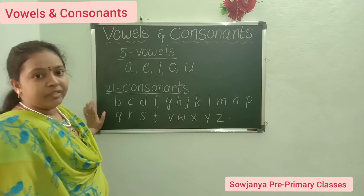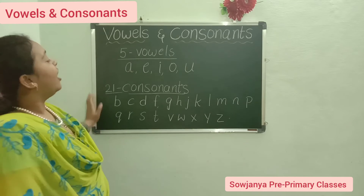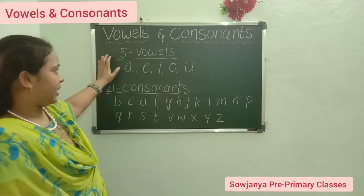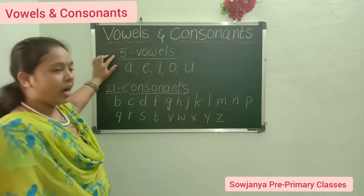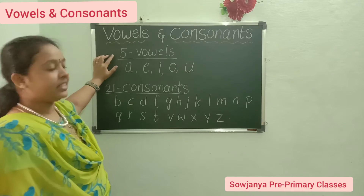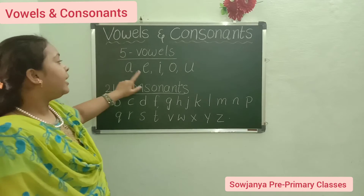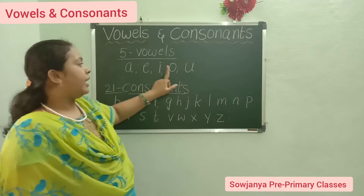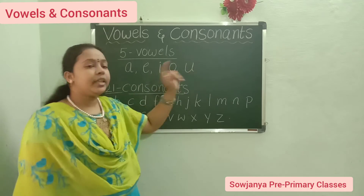One more time we will say. How many vowels are there? Five vowels. A, E, I, O, U.